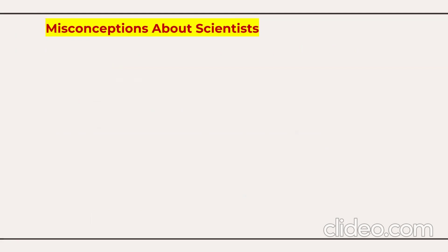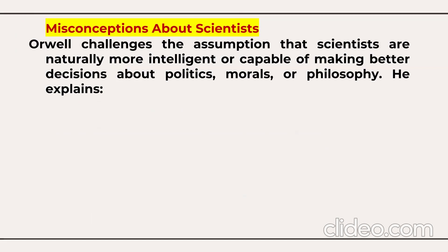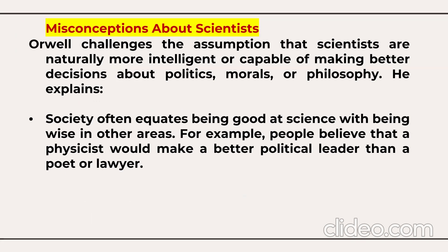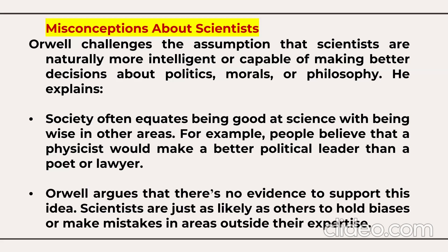George Orwell brings out misconceptions about science. He challenges the assumption that scientists are naturally more intelligent or capable of making better decisions about politics, morals, or philosophy. Society often equates being good at science with being wise in other areas — for example, people believe that a physicist would make a better political leader than a poet or lawyer. He argues there is no evidence to support this idea; scientists are just as likely as others to hold biases or make mistakes outside their expertise.